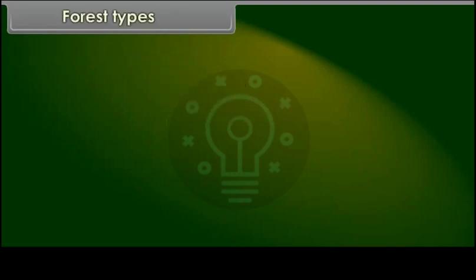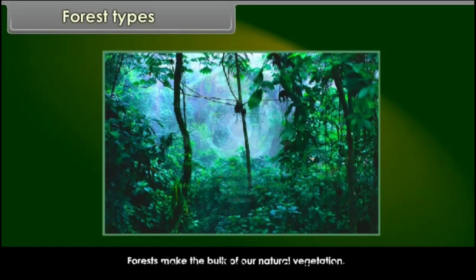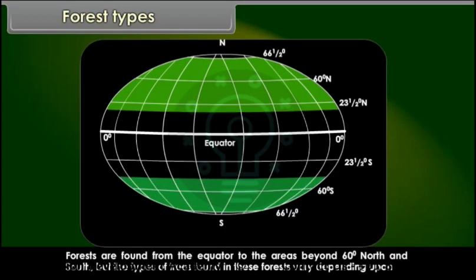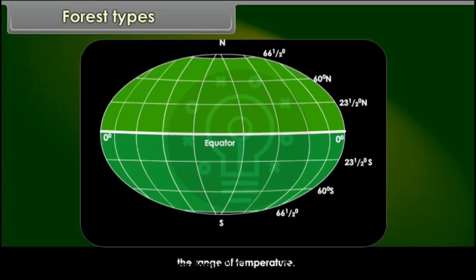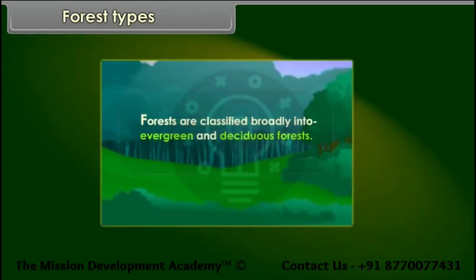Forest types: Forests make the bulk of our natural vegetation, found from the equator to areas beyond 60 degrees north and south. The types of trees vary depending on the range of temperature. Forests are classified broadly into evergreen and deciduous forests.